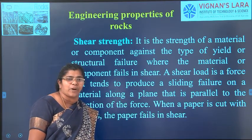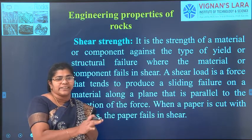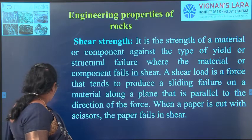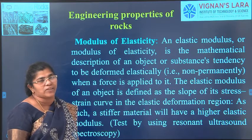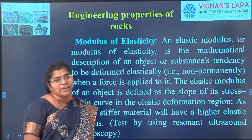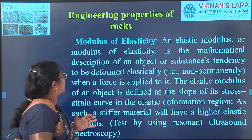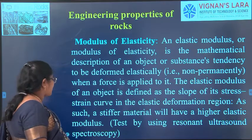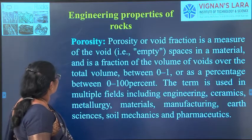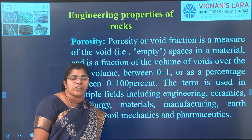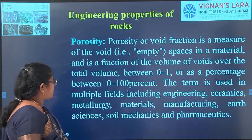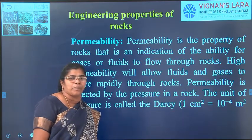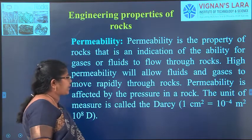Shear strength is based on crystal formation or granular formation. Due to shearing stresses, particles move against one another — similar to how a paper cut by scissors fails in shear. Sandstones or slates made up of layers fail in shear more easily, while granites or basalt made up of hard materials will not fail. Modulus of elasticity — within elastic limits, stress is proportional to strain. Almost all rock materials except sedimentary rocks have a very good modulus of elasticity. Porosity is very less in igneous and metamorphic rocks but slightly higher in limestone, and is directly proportional to permeability.